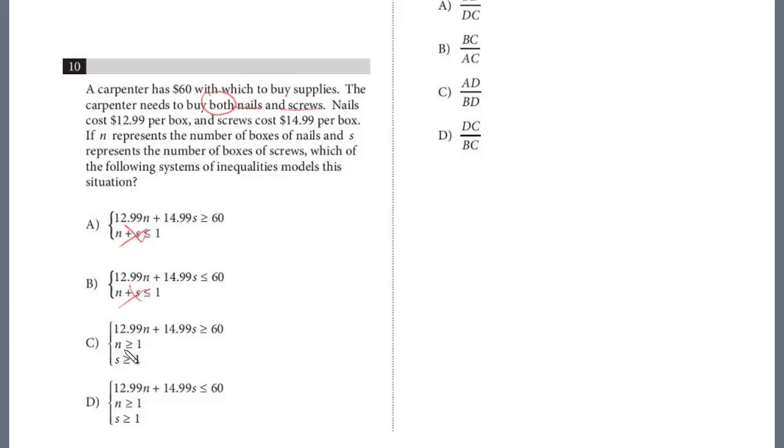He has to buy both of them. So at least has to buy one nail and one screw. So right away, we're down to C or D.